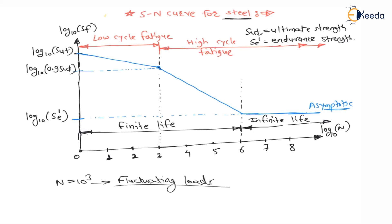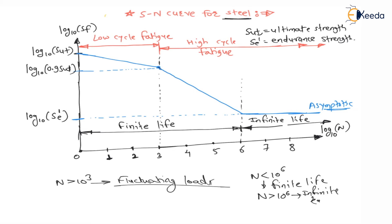Within fluctuating load design: when your component fails before completing 10⁶ revolutions, design for finite life using finite life equations. When the component fails after 10⁶ revolutions (1 million), design using infinite life equations.